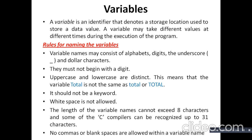While declaring variables, a keyword should not be part of the variable name. Whitespace is not allowed, so we should not use whitespace to declare a variable. The length of the variable name cannot exceed 8 characters, though some C compilers can recognize up to 31 characters. So our name may extend up to 31 characters, not beyond 31 characters.